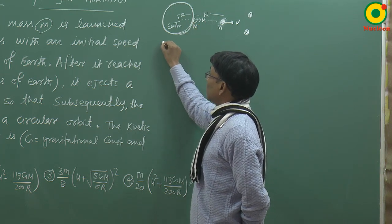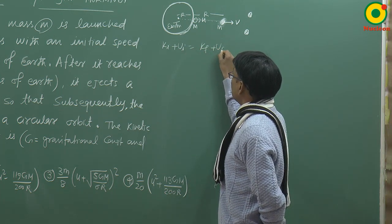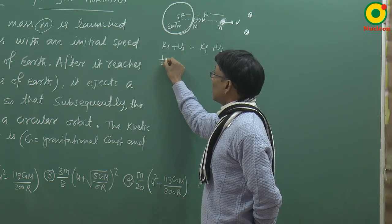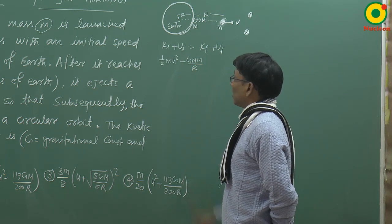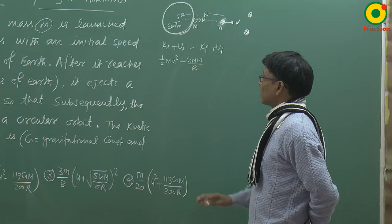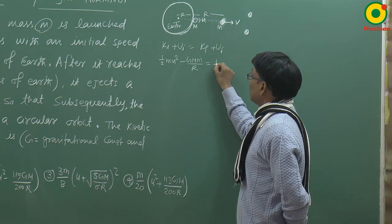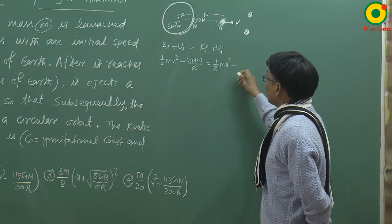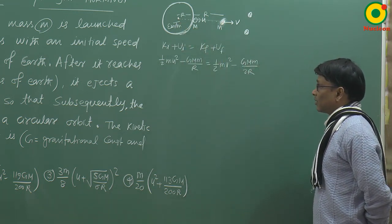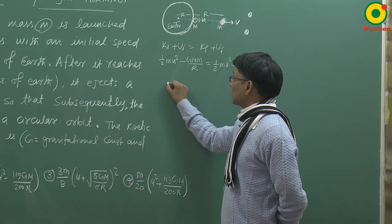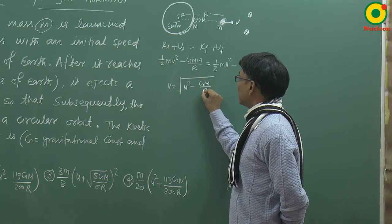Finding using energy conservation: initial kinetic energy ½mu² plus gravitational potential energy −GMm/R equals final kinetic energy ½mv² plus potential energy −GMm/2R, since the distance from centre is 2R. From this we can calculate v: v = √(u² − GM/R). This is the velocity of the satellite at height R.